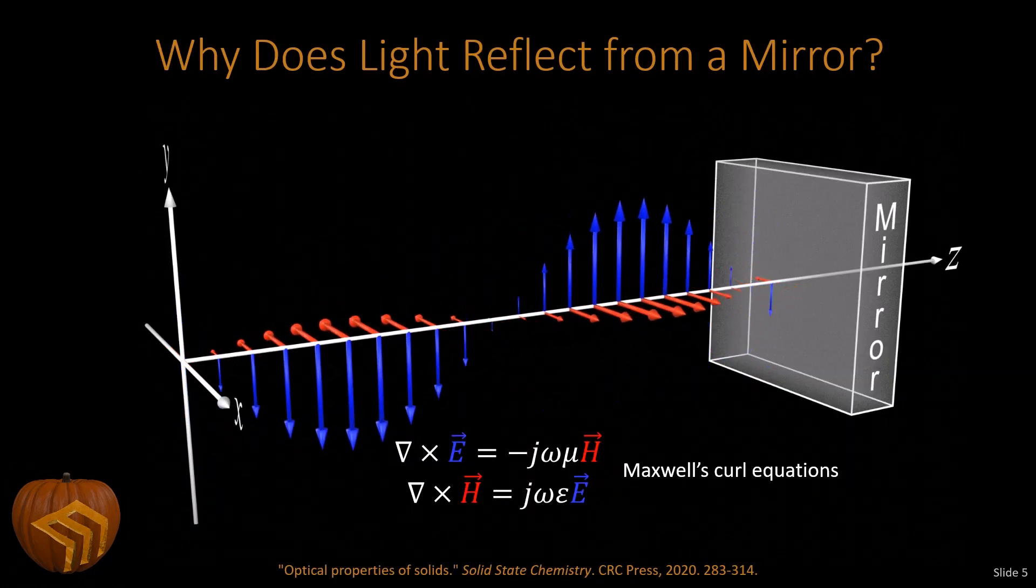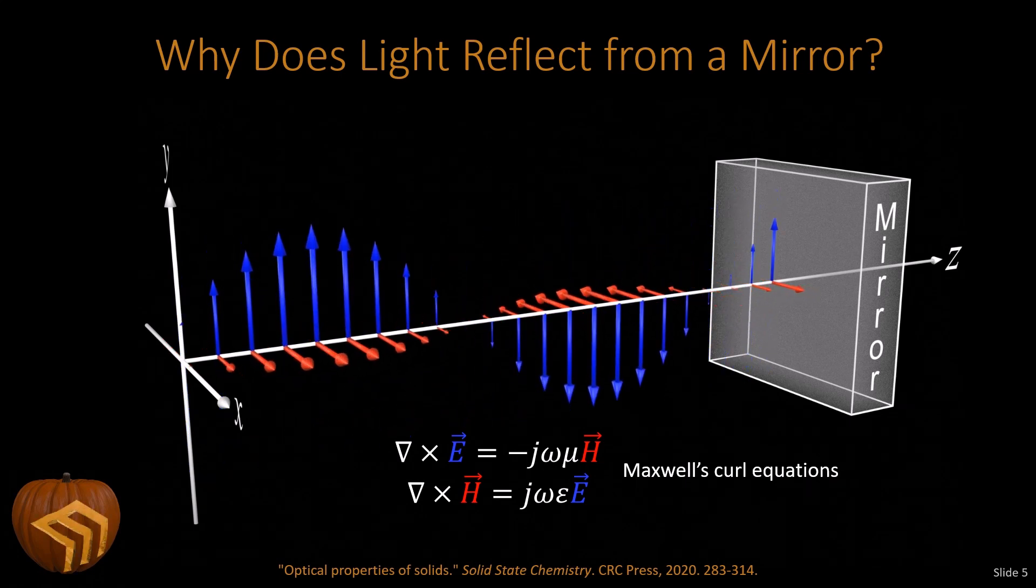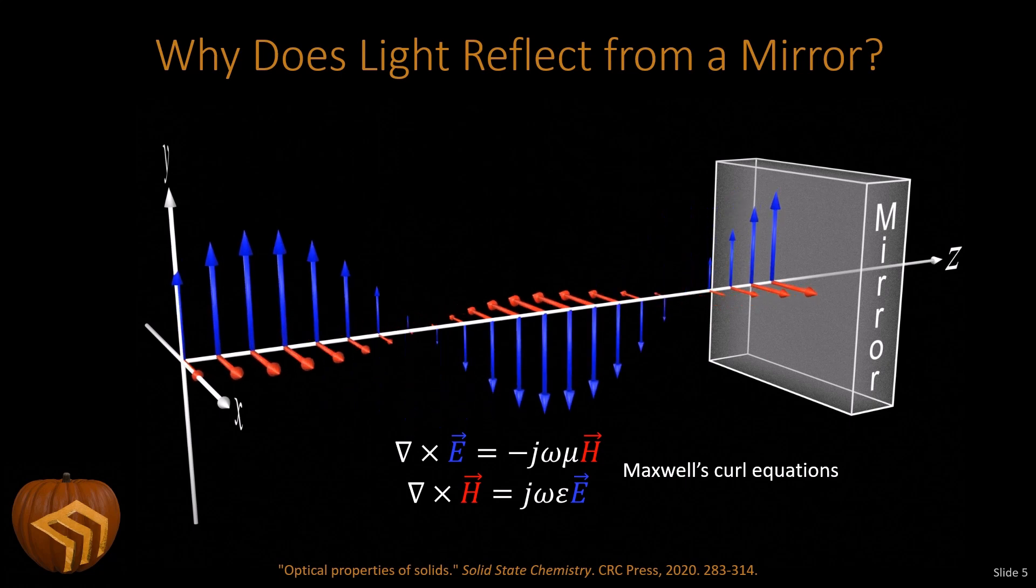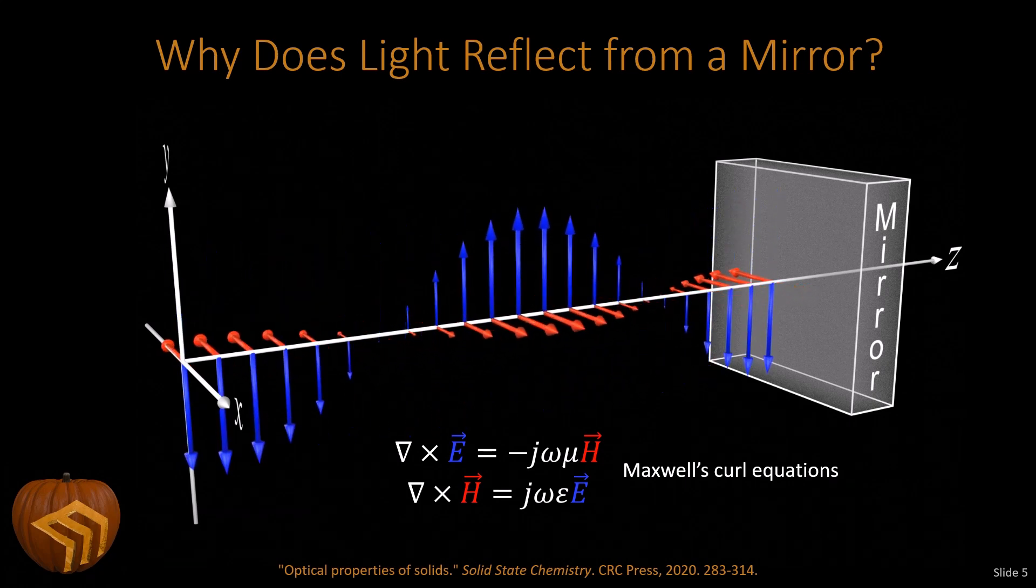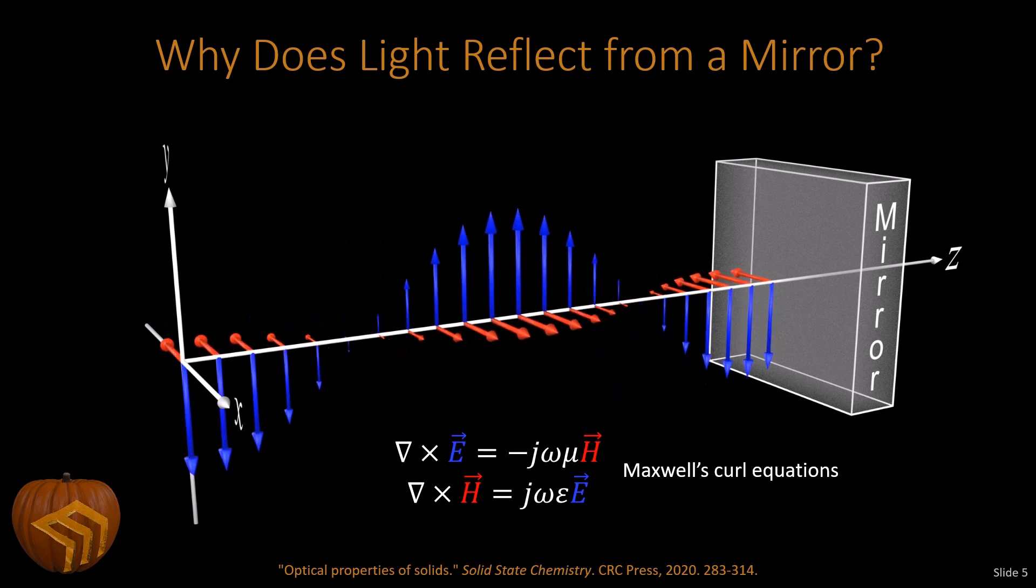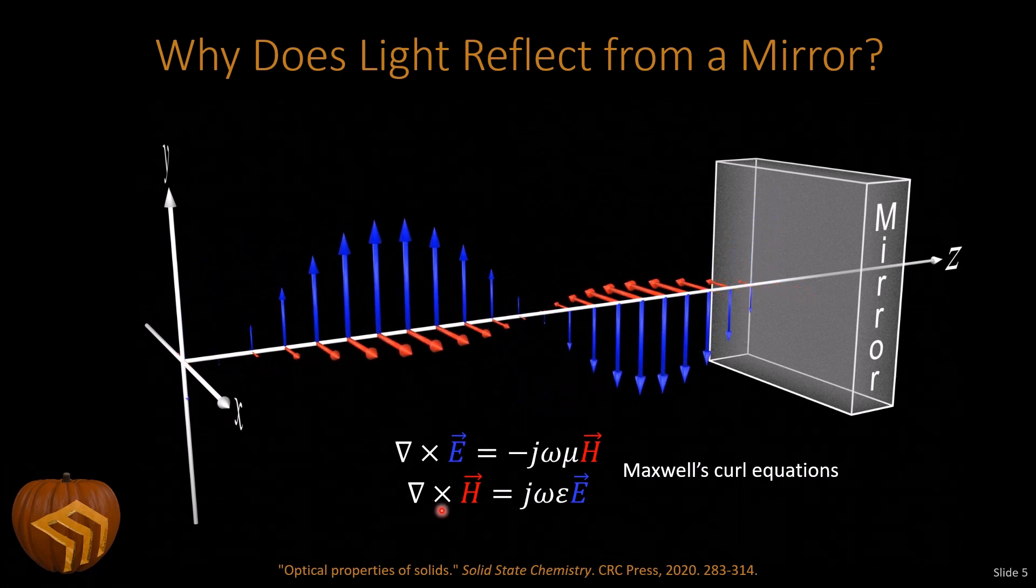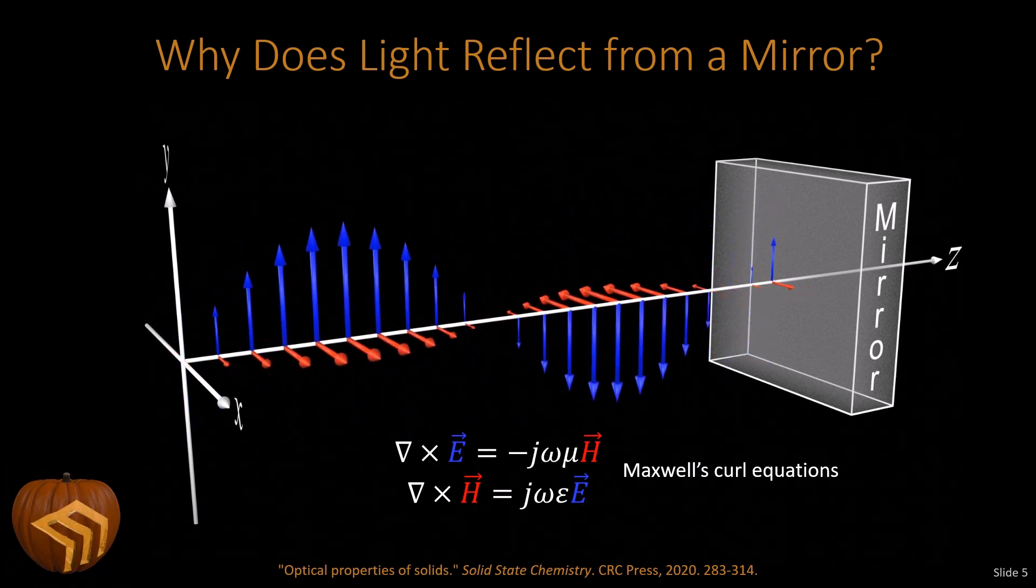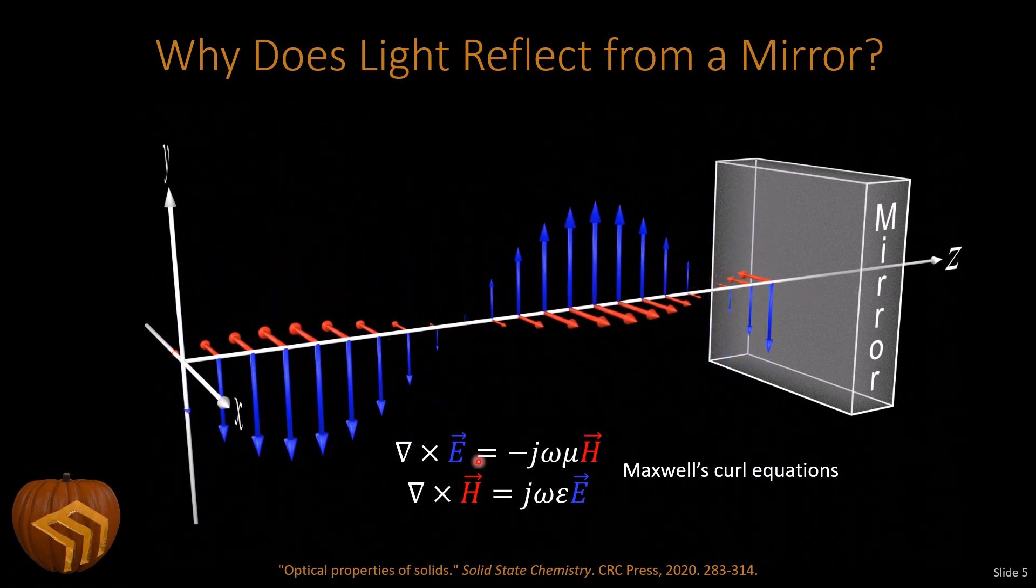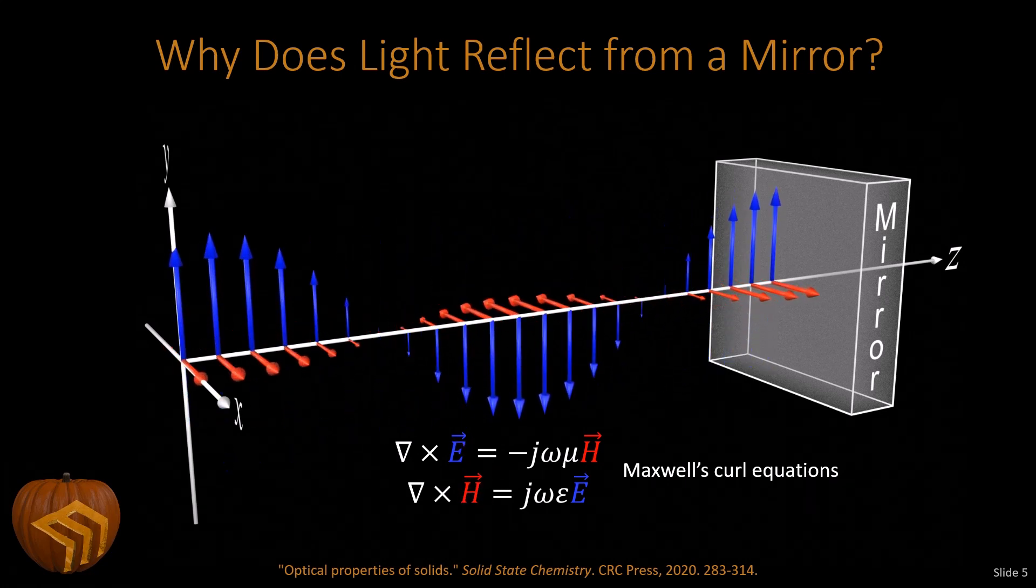Next, I want to talk about how light reflects from an ordinary mirror. So being an electromagnetic wave, light is composed of both an electric field and a magnetic field. And in this animation, I'm showing the electric field with the blue arrows and the magnetic fields with the red arrows. The equations that I'm showing here are called Maxwell's curl equations. So it's two coupled partial differential equations. I don't want to get too deep into the math,